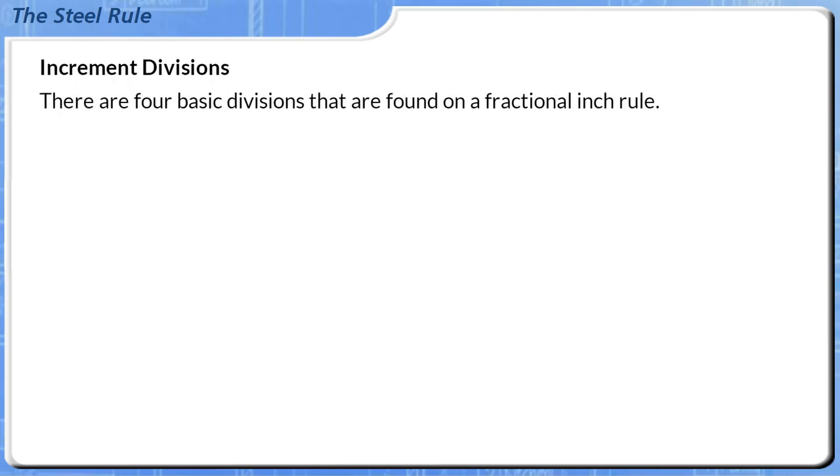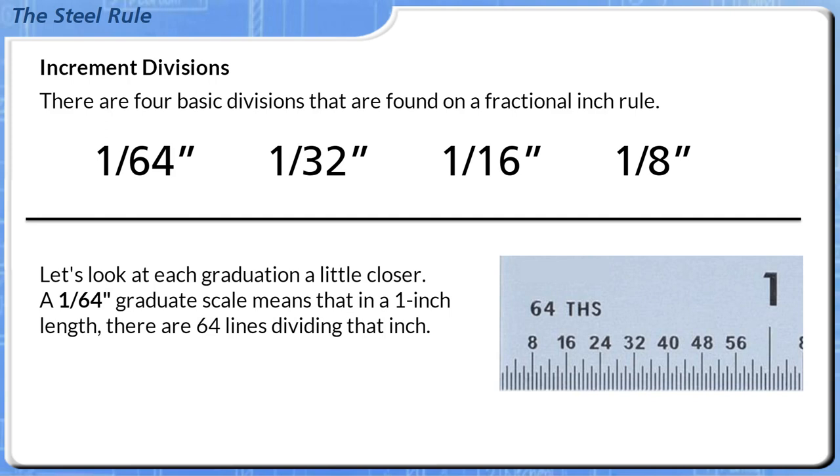There are four basic divisions that are found on a fractional inch rule. These are 1/64th, 1/32nd, 1/16th, and 1/8th of an inch. Let's look at each graduation a little closer.